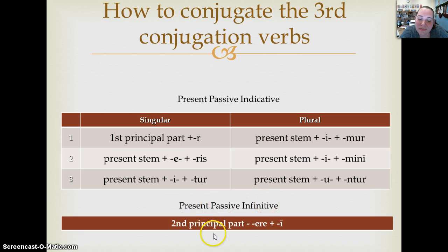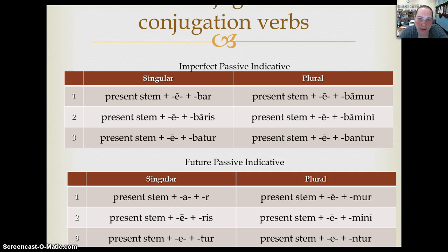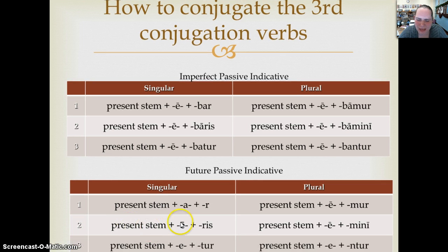For the present passive infinitive, take the second principal part, remove the entire ERE, and replace it with the long I. Now take one last look at the second person singular present passive indicative — you see that E with no macron. Compare it to the second person singular future passive indicative, which looks almost identical. The only difference is the E with the macron, and that is a very important macron.